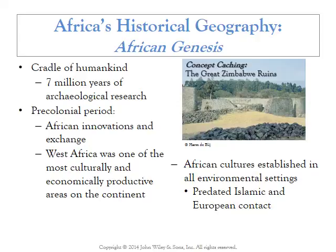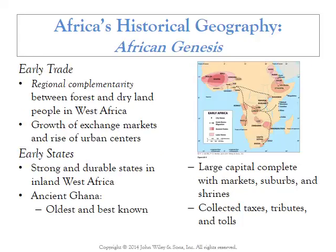Early civilizations and early tribes moved around Africa and things changed over time. Some of the early dominant civilizations were in West Africa. Then through cooperation, trade, and complementarity — certain regions producing certain things and other regions producing others — there was basic trade. Eventually the culture hearth sort of moved into East Africa.